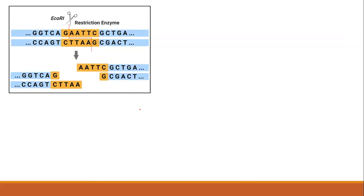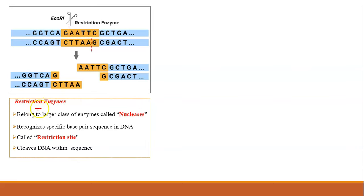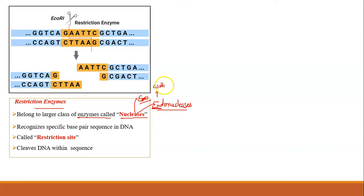Restriction enzymes are very popular enzymes in recombinant DNA technology. They occur naturally and have been identified in several bacteria, where they serve as a natural defense mechanism against bacteriophages. Restriction enzymes belong to a larger class of enzymes called nucleases — specifically endonucleases, which cleave within the DNA molecule. Unlike other nucleases that cut randomly, restriction enzymes recognize a specific base-pair sequence and cleave DNA within that sequence.